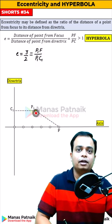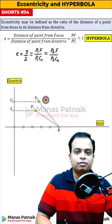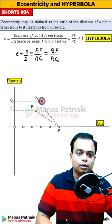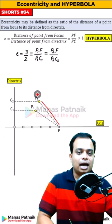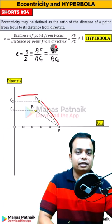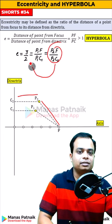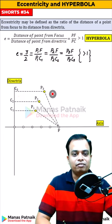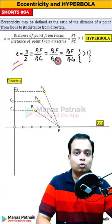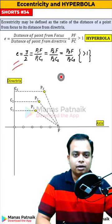Now the point will reposition itself to P2. Take the distance from the focus and the distance from the directrix. Plug those values in — you are going to get the same value of 3 by 2. Any point is no different; it is going to follow this same rule or ratio, that is eccentricity.